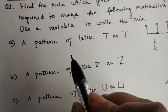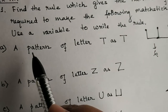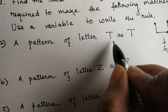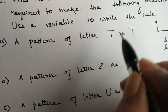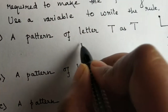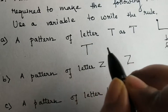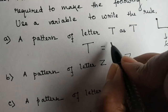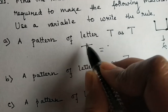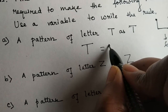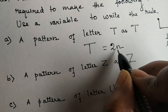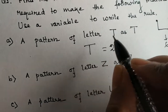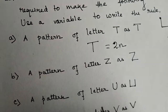So in the first part of this question, we have a pattern of the letter T. Here we can see that 2 mastics are used to form the letter T. So the rule for letter T will be 2 into n, where n is the number of T's we need, and 2 is the number of mastics in one alphabet.